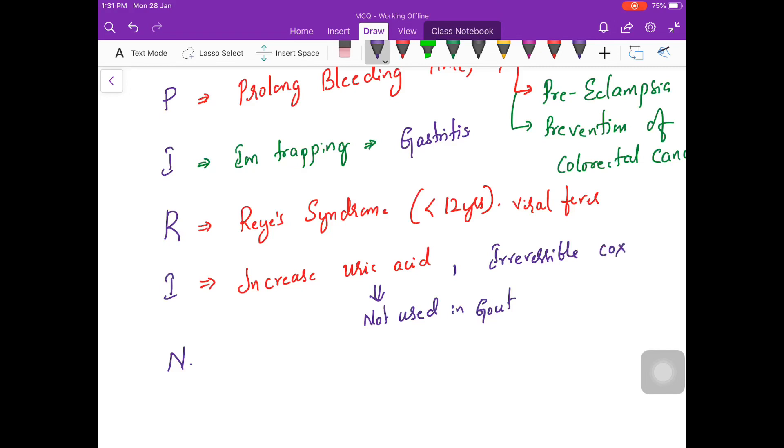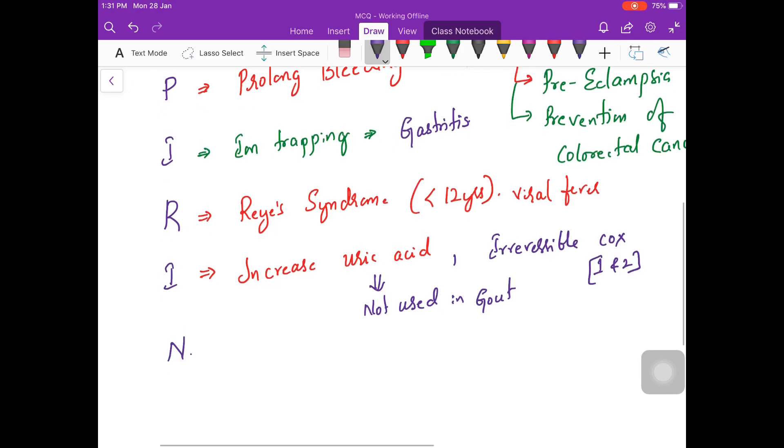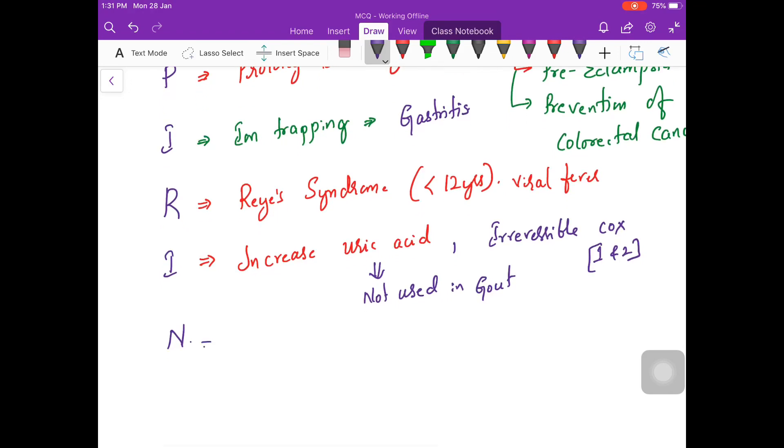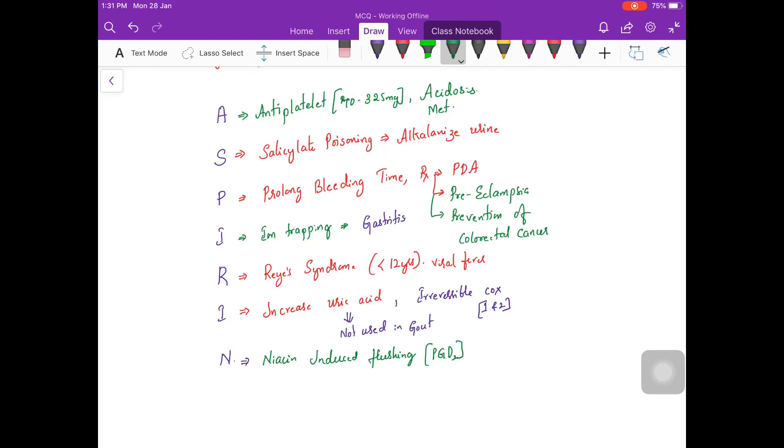Both COX-1 and COX-2 are inhibited by aspirin. This is the only irreversible COX inhibitor. Now N stands for it is used in something called niacin-induced flushing, because niacin causes flushing which is because of prostaglandins. That's why this is used, mainly the prostaglandin involved is PGD2.